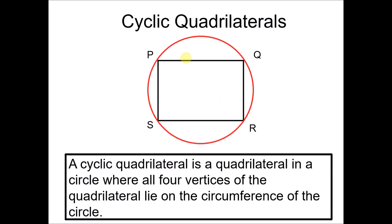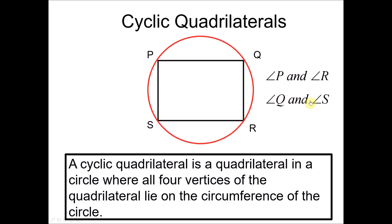If we label all four vertices P, Q, R, S, then angle P and the opposite angle, which is R, form a pair of opposite angles. Similarly, Q and its opposite S also form a pair of opposite angles.